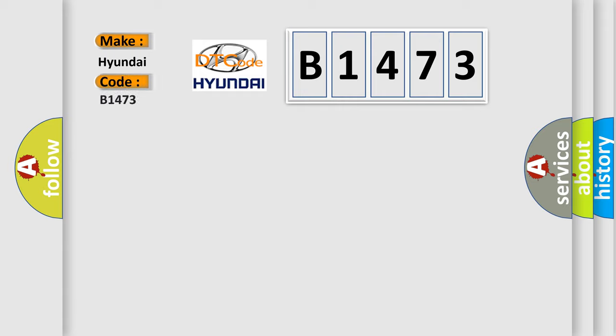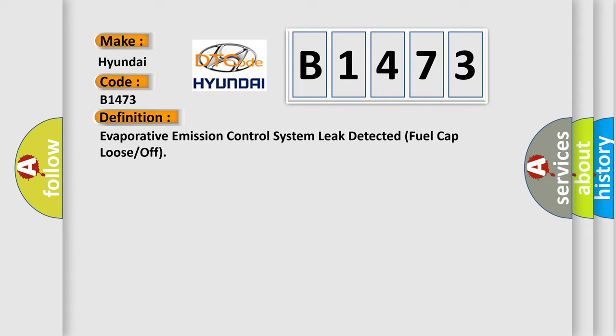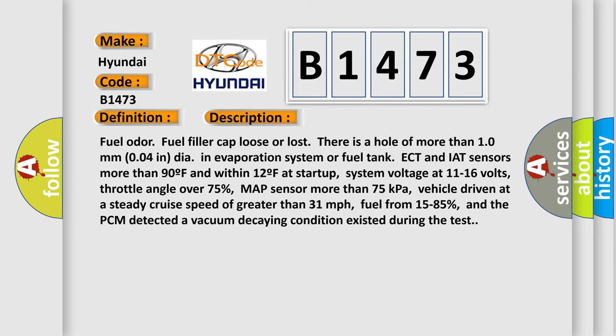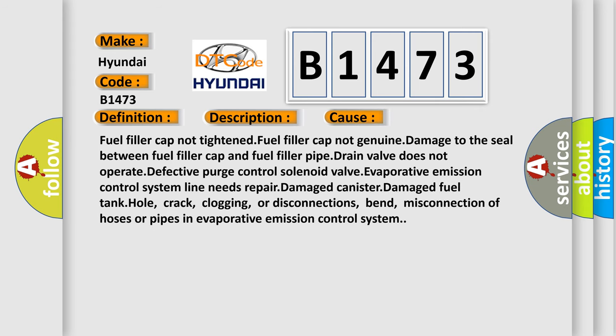What does the diagnostic trouble code B1473 interpret specifically? The basic definition is: Evaporative emission control system leak detected — fuel cap loose or off. The conditions include: fuel odour, fuel filler cap loose or lost, a hole of more than 10mm (0.04 in) in the evaporation system or fuel tank, ECT and IAT sensors more than 90°F and within 12°F at startup, system voltage at 11 to 16V, throttle angle over 75%, MAP sensor more than 75 kPa, vehicle driven at a steady cruise speed greater than 31 mph, fuel level from 15 to 85%, and the PCM detected a vacuum decaying condition during the test.